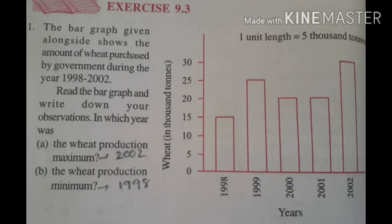We have to answer the questions — it's very easy, dear students. First question: in which year was wheat production maximum? Which year has the biggest wheat production? So dear students, look at the graph — which bar looks the biggest? In 2002. You can see it goes almost up to 30, that means around 30,000 tons of wheat production in 2002. That is the maximum.